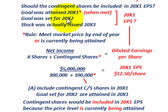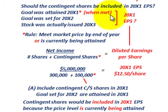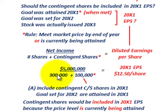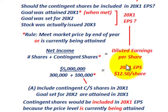Our goal was set for year 20x2, it was attained in year 20x1, and the stocks will actually be issued in 20x3. But based on our rules, because we attained that goal ahead of time in 20x1, we have to include it in 20x1's earnings per share, which affects our diluted earnings per share. Had we not included those 100,000 contingent shares for year 20x1, we'd simply have our net income of $5 million divided by 300,000 average shares — giving a higher EPS. Including the contingent shares, because the goals were being met, causes a dilutive effect on earnings per share.